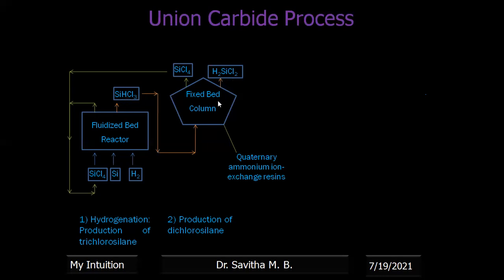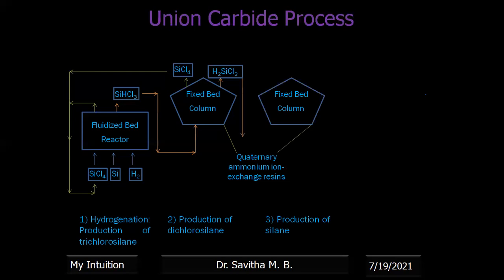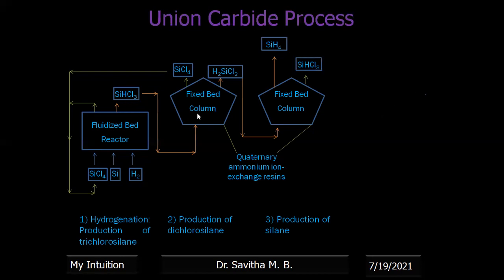In the third step, dichlorosilane from the second quaternary ammonium ion exchange resin is taken to another fixed quaternary ammonium ion exchange resin, where all the remaining chlorine atoms are replaced by hydrogen. This produces silane (SiH4). Along with this, trichlorosilane is also produced as a by-product, which is sent back to the second chamber.